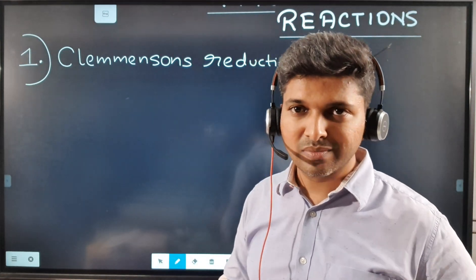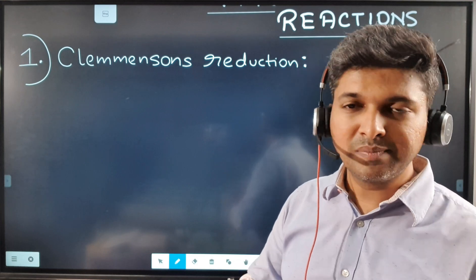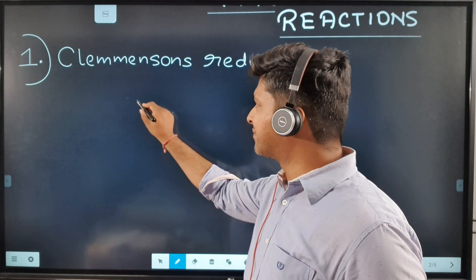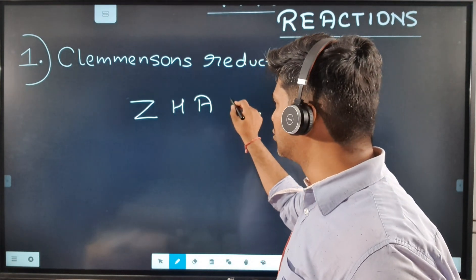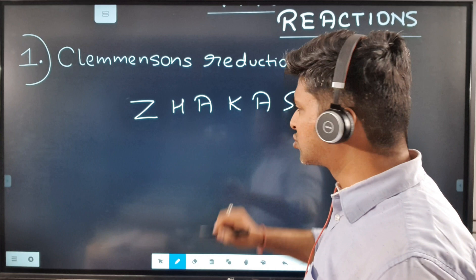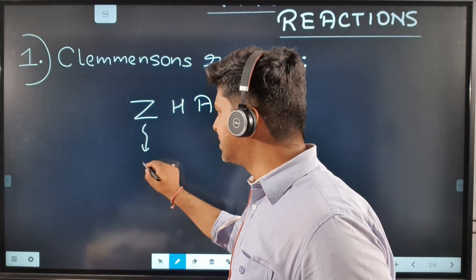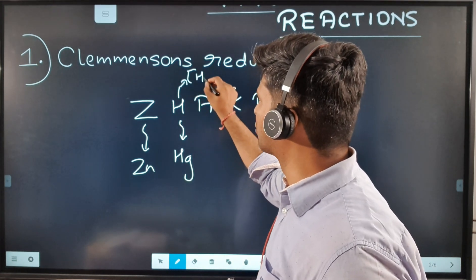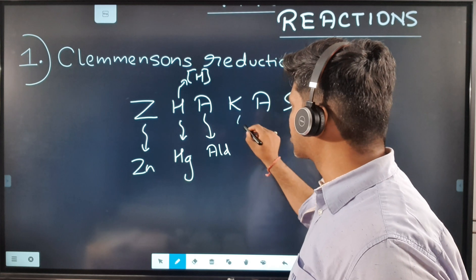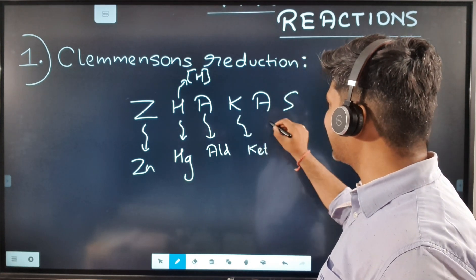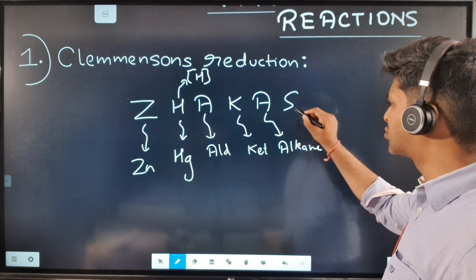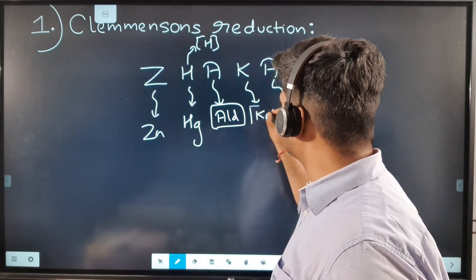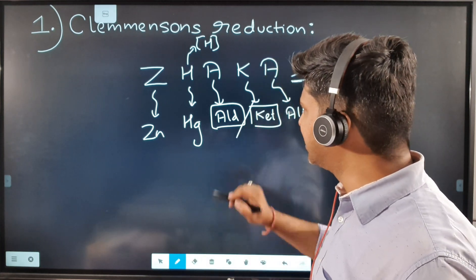The first one: Clemmensen's reduction. This is a reaction wherein aldehydes or ketones get reduced to alkanes. I have designed a mnemonic for you to remember this reaction — that is 'jhakaas', a Bollywood word. Z will stand for zinc, H will stand for HgCl2, H will also stand for nascent hydrogen, A will stand for aldehyde, K for ketone, A finally for alkane, and S is just to complete the word. So we can either use an aldehyde or a ketone in this reaction.